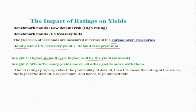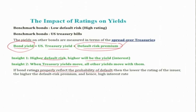That means a higher default risk premium must be paid. Similarly, when treasury yields move, other bond yields move with them. Assuming the default risk premium is constant for other debt instruments, when the treasury yield increases the overall bond yield for other bonds also increases. Similarly, when the treasury yield declines, so does the bond yield, because we assume the default risk premium is constant. So if bond ratings properly reflect the probability of default, then the lower the rating of the issuer, the higher the default risk premium and hence the higher the interest rate.